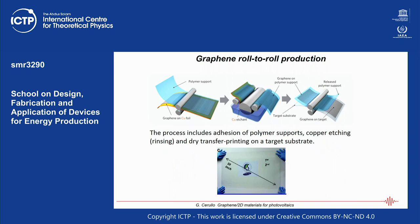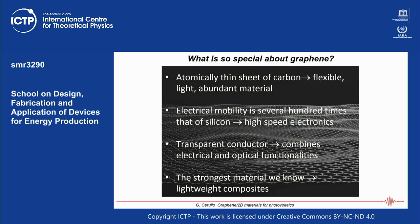The CVD process on copper allows you to create very large surfaces, and there has been dramatic progress especially in Asia. This is a roll-to-roll production procedure: you grow graphene on a copper foil, use a polymer support to transfer the graphene, and then transfer it to a very large substrate. Here you can see a 30-inch single-layer graphene, which enables this material to be used in many practical applications.